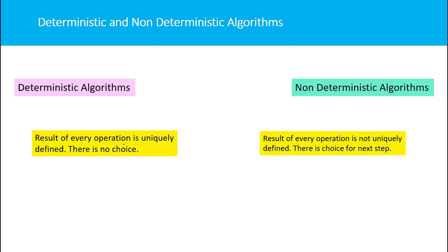In a deterministic algorithm, the result of every operation is uniquely defined — there is no choice. You may recall deterministic and non-deterministic automata. In non-determinism, there is a choice; the result of every operation is not uniquely defined and there is a choice for the next step. In a deterministic algorithm there is no choice. All the algorithms we use in the real world are deterministic — a computer cannot choose like a human being; everything is clearly defined. Non-deterministic algorithms are used for research purposes.